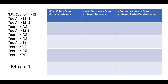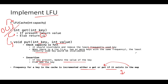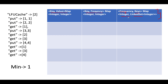Since we are building a least frequently used cache, we have to store the frequency corresponding to each key. So the second map represents the mapping between key and its frequency. The third map is the most interesting one: it maps frequency as the key to a linked hash set of all keys that have that frequency. We use a linked hash set because whenever there is a collision, we have to delete the least recently used key — the one added first into this set.